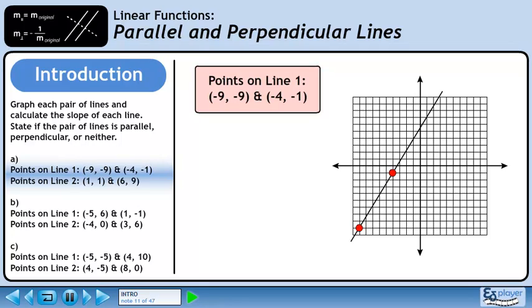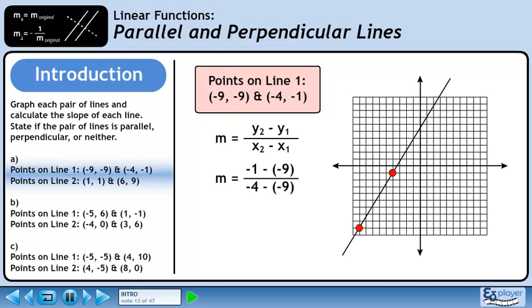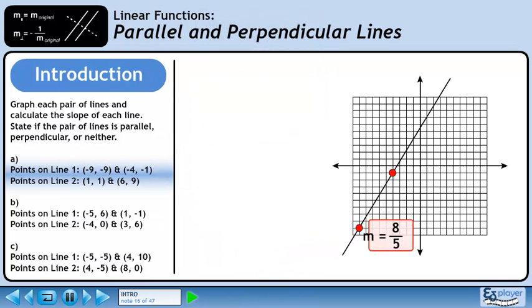Plot the two points and draw the line. Now we'll calculate the slope using the slope formula. Plug the numbers into the formula. Clean up the double signs. The slope is 8 over 5. Let's store the slope beside the line so we can reference it later.